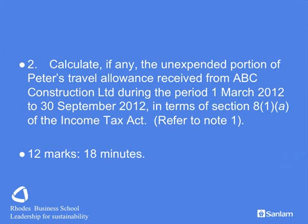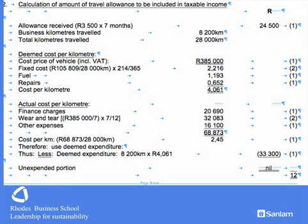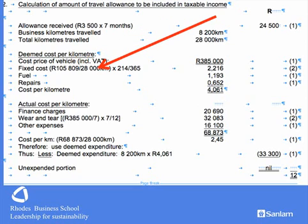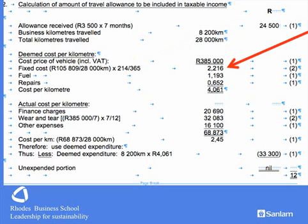In part two we do a travel allowance computation. Notice you've got a generous mark allocation and a full 18 minutes. First, determine the allowance: R3,500 times 7 months — that's money for jam. From the question we get the business mileage and total mileage. We use the cash cost of the vehicle, R385,000, to look up the fixed cost component which per tables is R105,809. We divide that by total kilometres and multiply by 214 days over 365 to get the fixed cost per kilometre. Per tables we then add in fuel and maintenance, giving a deemed cost of R4,061 per kilometre.